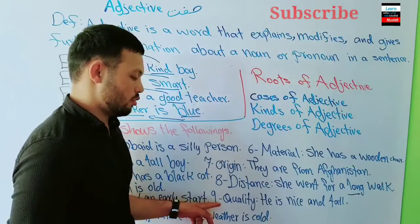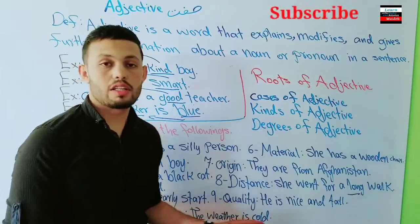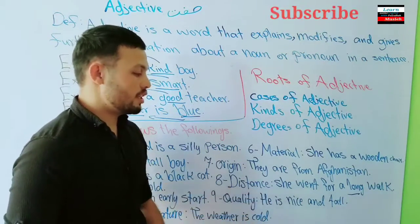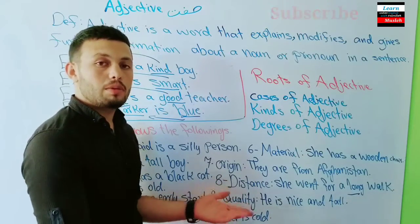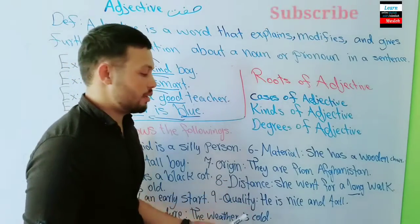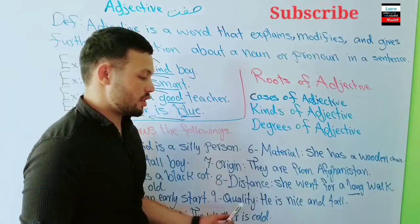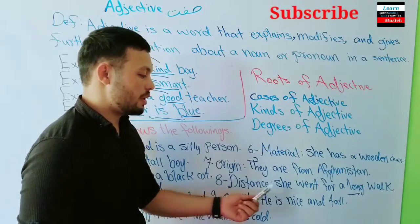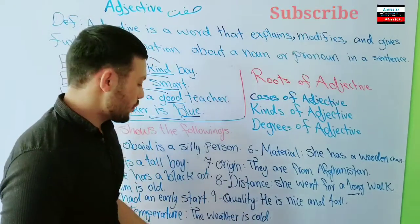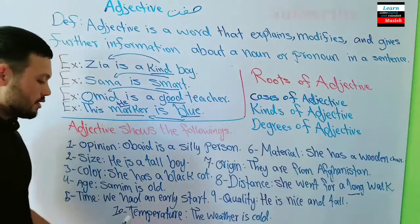Number nine: quality adjectives describe the qualities of a person or thing. For example: 'He is nice and tall.' Here both 'nice' and 'tall' describe his qualities — he is good-looking and has a tall height.